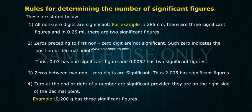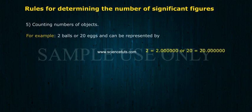Rule 4: Zeros at the end or right of a number are significant, provided they are on the right side of the decimal point. For example, 0.200 grams has three significant figures.